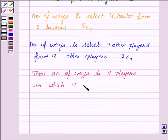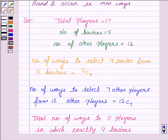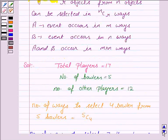exactly 4 are bowlers is equal to the number of ways to select 4 bowlers from 5 bowlers, that is 5C4, into the number of ways to select 7 other players from 12 other players, that is 12C7. This is by the fundamental principle of counting as we discussed in the key idea.